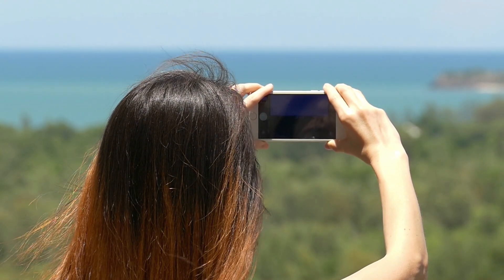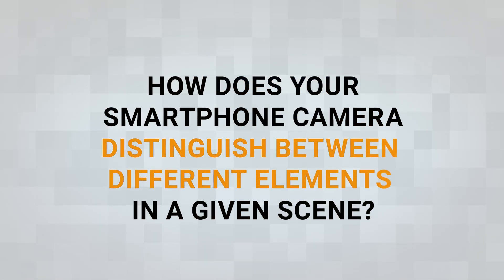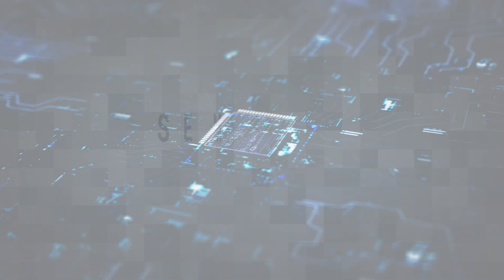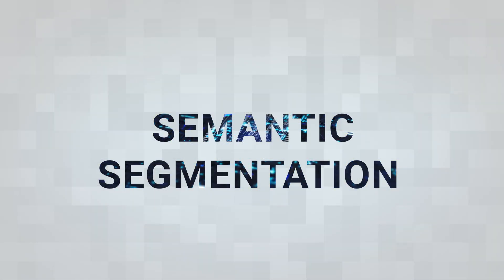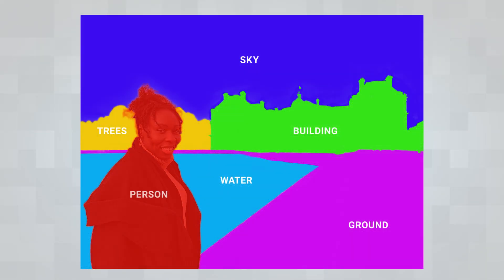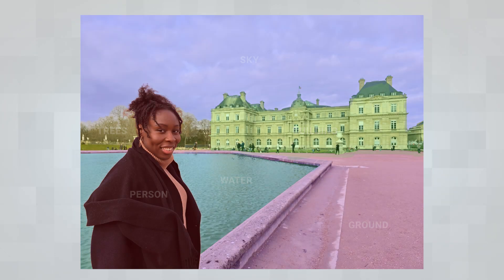When it comes to smartphone cameras, you may wonder how do they distinguish between different elements within a scene. The smartphone uses deep learning to perform what is called semantic segmentation — the process of classifying each pixel in an image in real time into predefined categories such as buildings, sky, or people. This is different from traditional image classification models that label entire images.